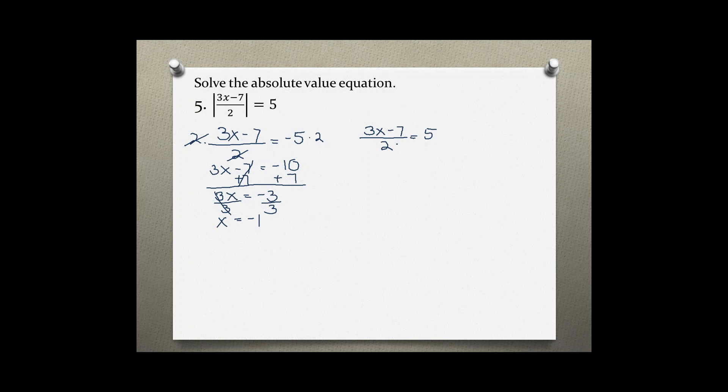Now solving the right side, the positive version of this problem, also multiplying by 2 on both sides. Then adding 7 to both sides equals 17, dividing by 3 on both sides. So x equals 17 over 3 is our second solution.